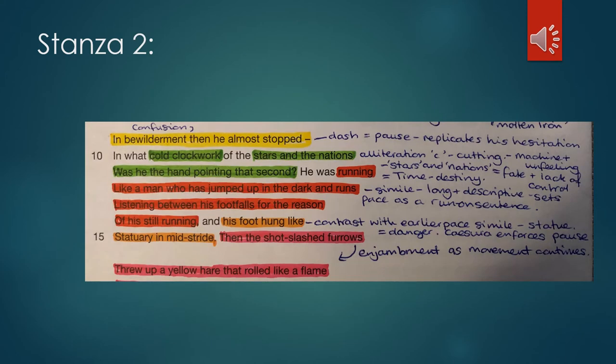So stanza two. In bewilderment then, he almost stopped. Now the dash at the end of that line means that we get a pause slightly there just after the word stopped, which the pause replicates his hesitation. He almost stopped. So he didn't quite stop. But that dash gives us a half breath at the end of that line to replicate him almost stopping. He's in bewilderment, which means he's confused. His body is starting to catch up with this early kind of awakening and throwing into the action. So this is all about the physical and the mental here in this stanza.